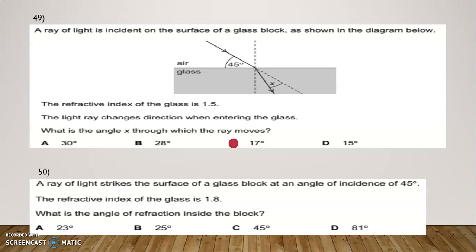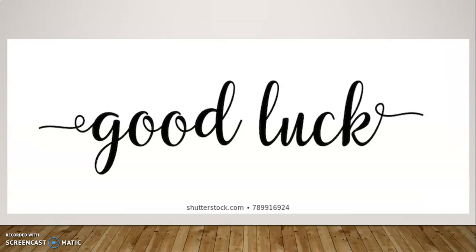Question Number 50: A ray of light strikes the surface of a glass block at an angle of incidence of 45°. The refractive index of the glass is 1.8. What is the angle of refraction inside the block? Options: 23, 25, 45, 81. The correct option is 23. That's all about your quiz — good luck!